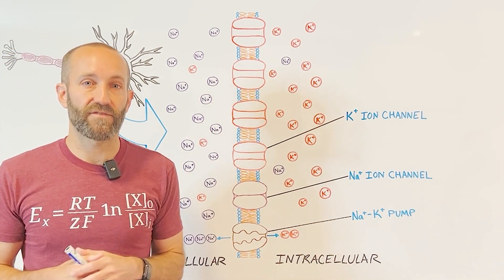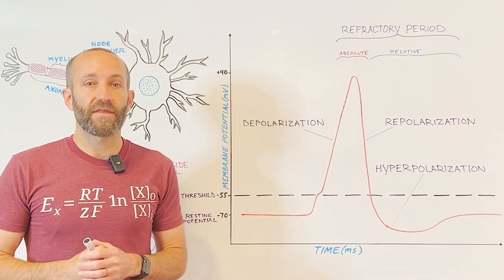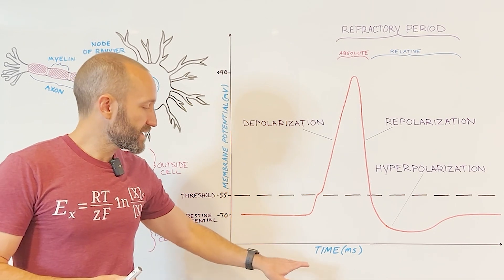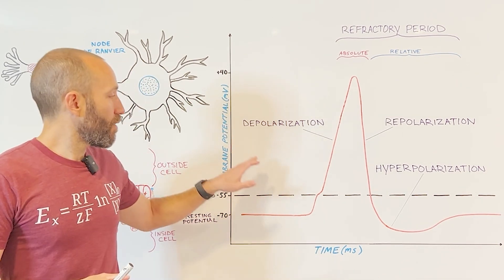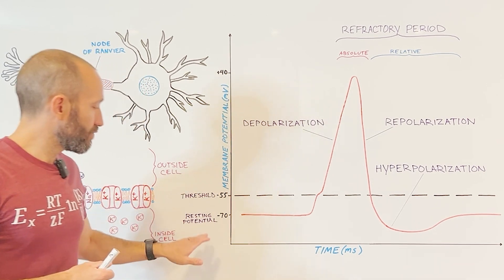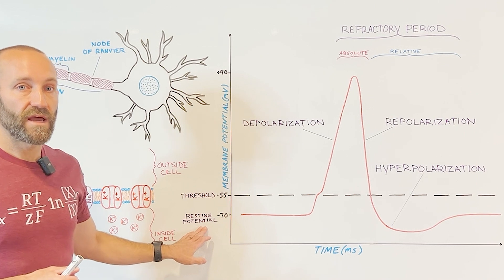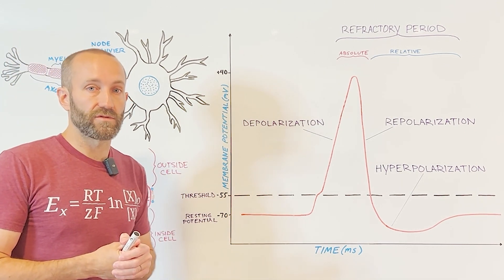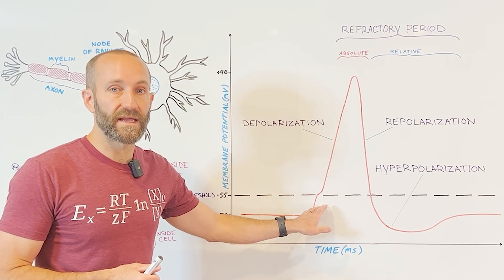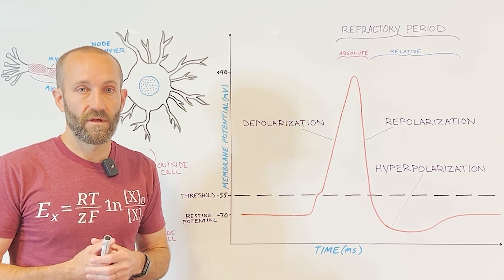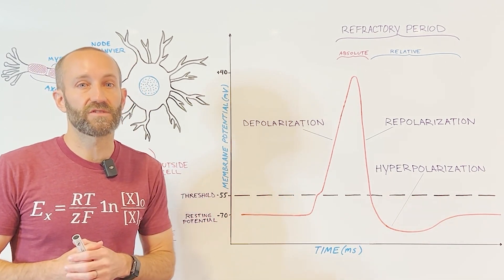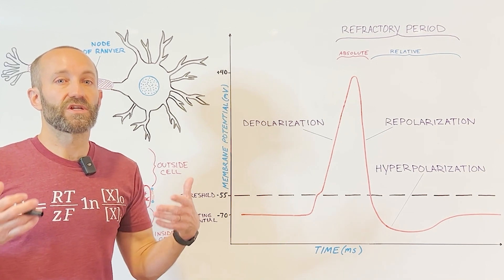Now the stage is set for the action potential. We use this figure here to look at how the membrane potential changes over the course of the action potential. The x-axis represents time in milliseconds, and the y-axis represents membrane potential in millivolts. We're starting at resting membrane potential, negative 70 millivolts. The first step leading to an action potential is when the membrane potential moves closer to zero, becoming less negative — a process known as depolarization. When we have a separation of charges, we call that polarization. So depolarization is when that separation is reduced.